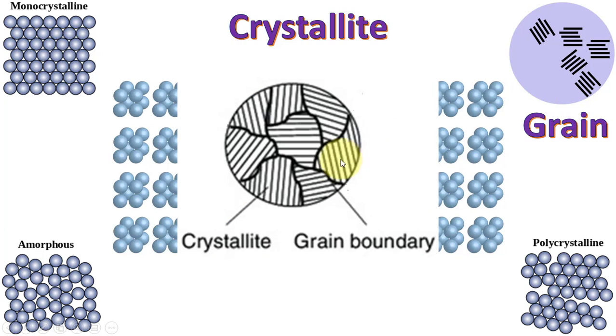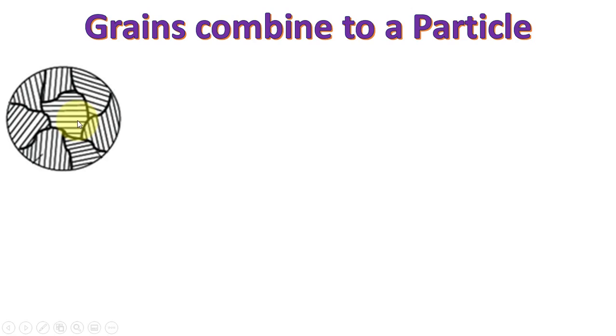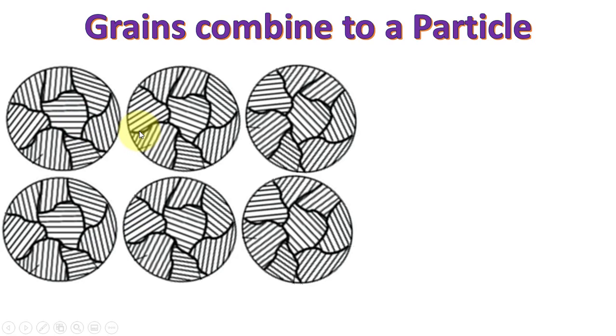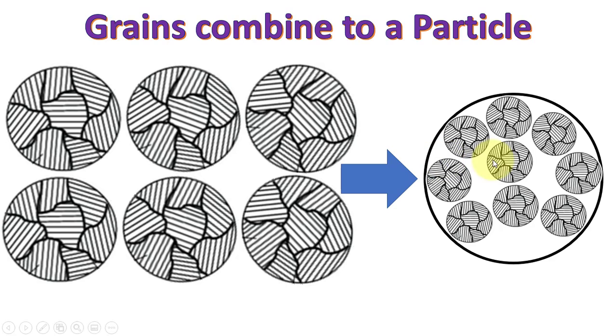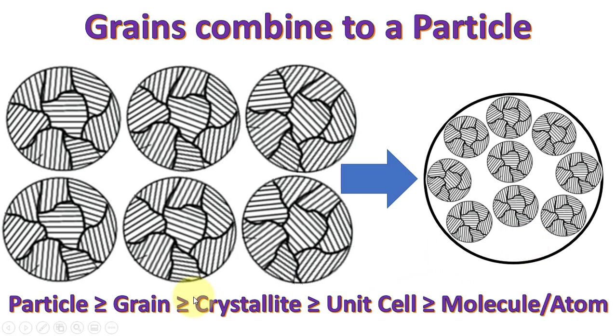When these crystallites combine in different orientations we call it a grain, and the boundaries of these crystallites are called grain boundaries. When we combine grains with each other it forms a particle, and inside a particle there may be one or more grains. A particle is always greater than a grain, and grain is always greater than a crystallite, which is greater than a unit cell, which is greater than a molecule or atom.